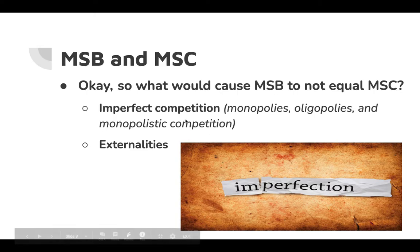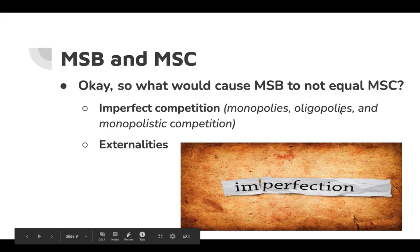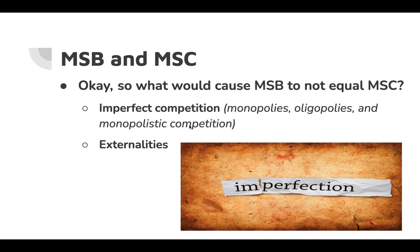One answer is imperfect competition — monopolies, oligopolies, monopolistic competition. Those types of marketplaces cause marginal social benefit and marginal social cost to not necessarily be equal, creating deadweight loss and inefficiency. We also see, and this will be our focus for section 6.2, that sometimes externalities exist.